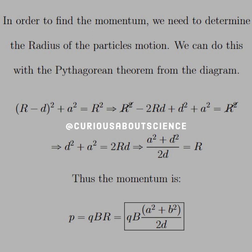So we see from setting that up that R squared is equal to R minus D squared plus A squared. Then we're just simplifying and canceling through until we get to a final R, which is equal to A squared plus D squared over 2D.